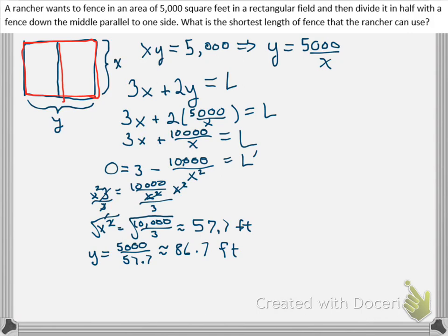Now we have to ask ourselves, does this answer the question? Well, what are the total lengths of the fence? We need to go back to our length equation and put in the values that we found. So L is going to be equal to 3 times 57.7 plus 2 times 86.7, which is going to give us an approximate length of 346.5 feet of fencing that's going to be needed for this project.